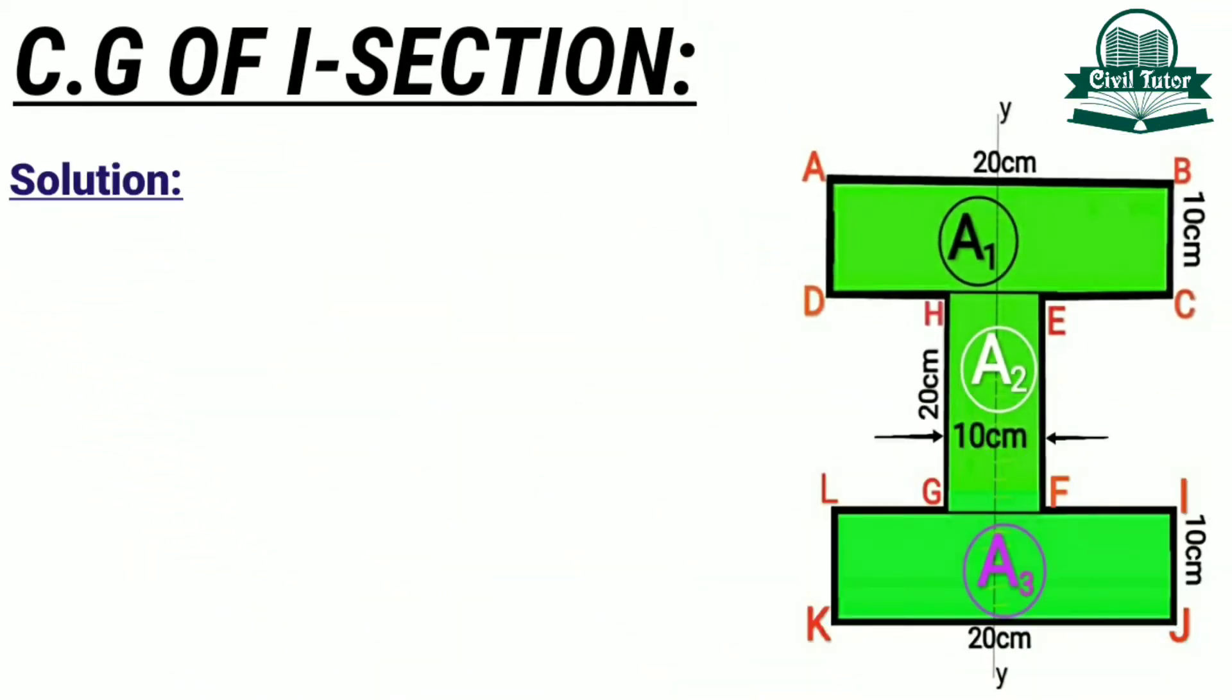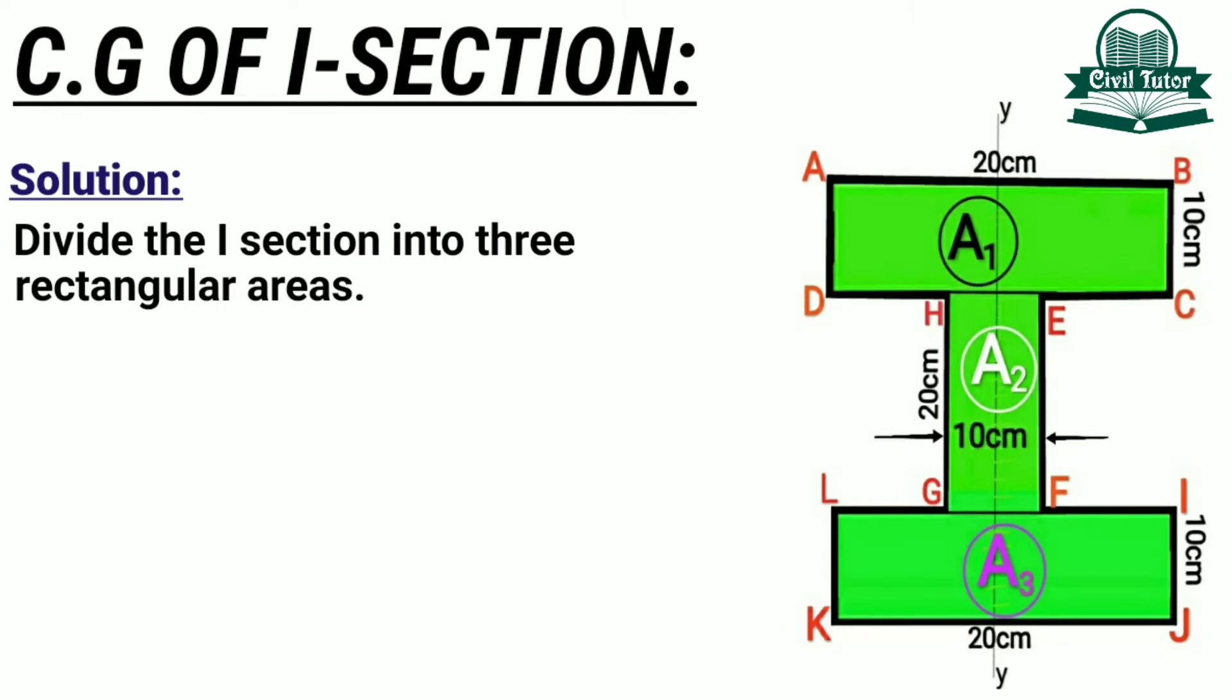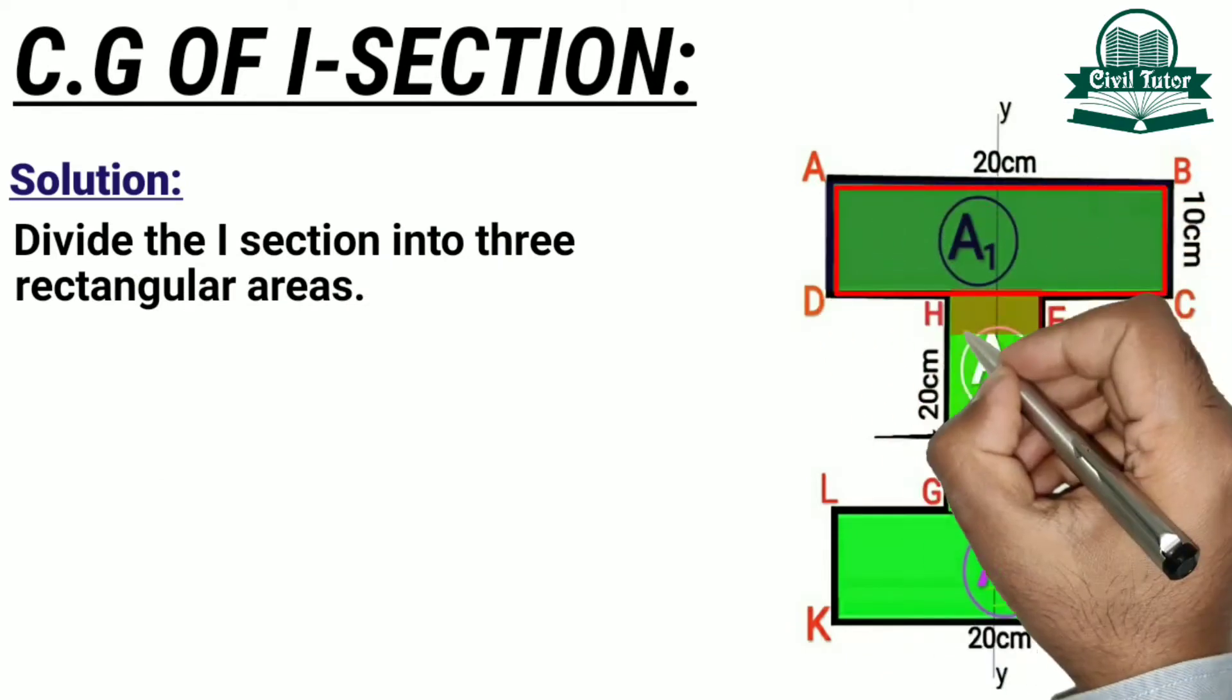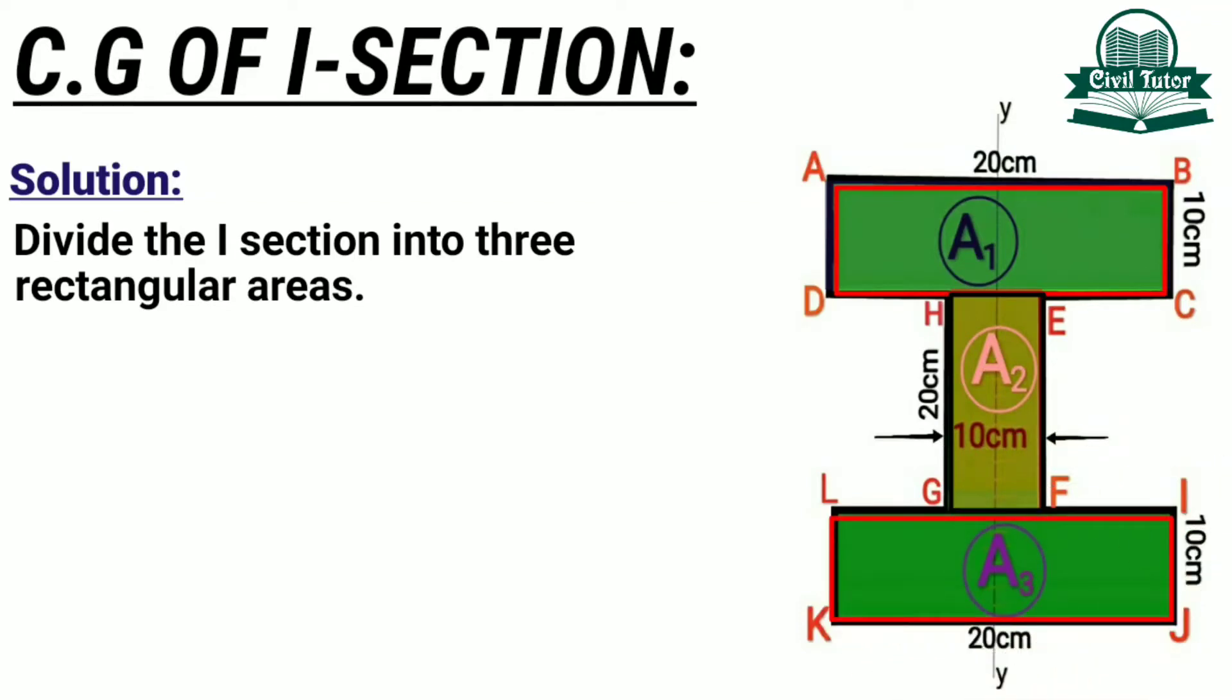Whenever we need to find the center of gravity of any composite section, we divide the section into a number of areas. Similarly, we will divide the I-section into three areas: area 1 which is ABCD, area 2 EFGH, and area 3 IJKL.